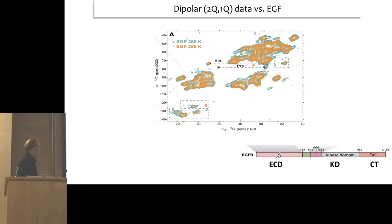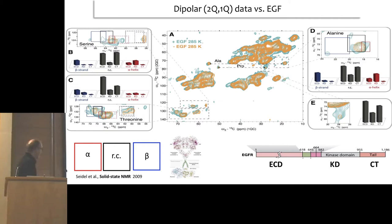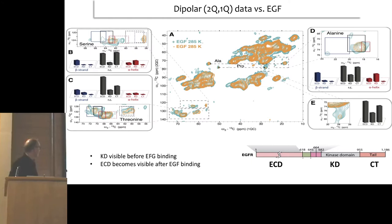Then we can do NMR experiments - not the kind of things from textbooks, but these days we can measure spectra, specifically so-called solid-state double quantum spectra. Based on the structural model from crystal structures, we can compare before and after addition of EGF what happens to this system. What we can clearly see are strong changes in the alpha-helical region and in particular in the so-called beta-strand regions. These beta-strand signals must come, if any of this structure is relevant for our preparations, from the extracellular domain. The signals increase after addition of EGF at higher temperature. What that means for NMR is that before the addition of EGF, the extracellular domain is relatively rigid - probably attached to the membrane. Once we bind EGF, the extracellular domain becomes less dynamic.